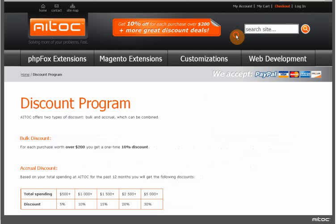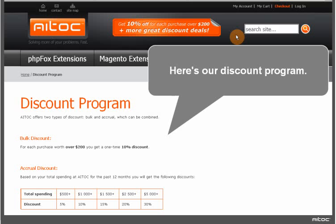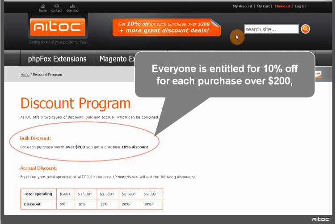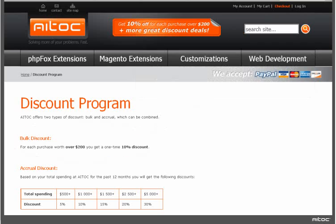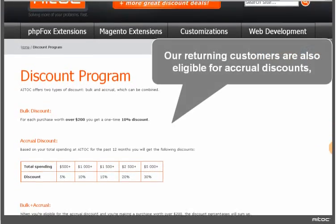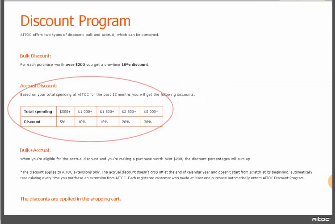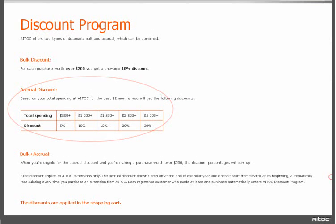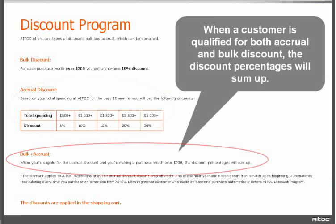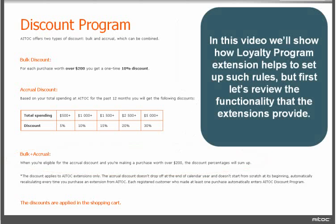Atox store. Here is our discount program. Everyone is entitled for 10% off for each purchase over $200. Our returning customers are also eligible for accrual discounts. When a customer is qualified for both accrual and bulk discount, the discount percentages will sum up. In this video, we'll show how the loyalty program extension helps to set up such rules.